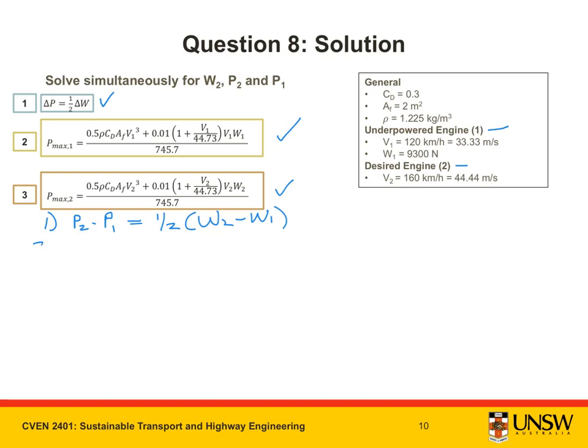For equation 2, P_max₁, I can expand it. That is 0.5, ρ is 1.225, CD is 0.3, AF is 2, and V₁ cubed is 33.33 cubed.